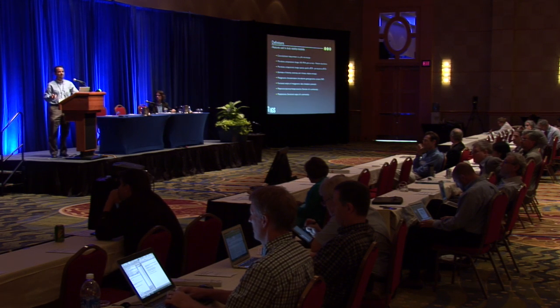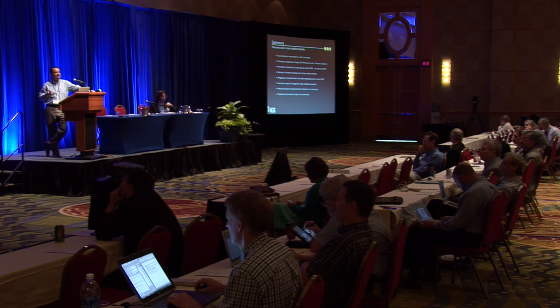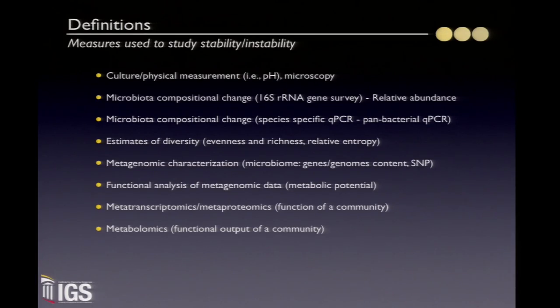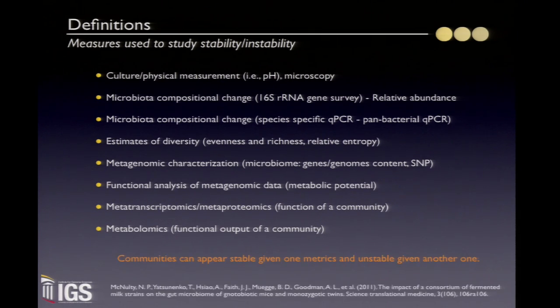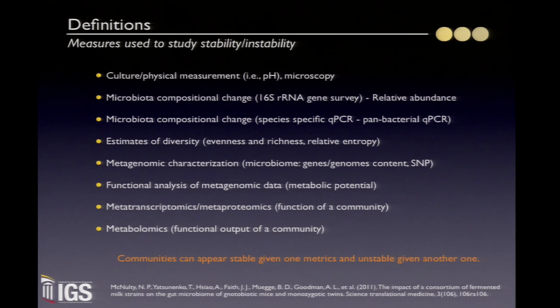There are many ways by which you can measure different metrics for stability. Depending on the metrics you use to define stability, you might get different answers. A community might appear stable given one metric, but unstable given another. A recent paper from Jeff Gordon's lab showed that by just introducing a probiotic, the community does not change in composition, but its gene expression changes dramatically. So it's very important in terms of what metrics you use — composition-based or more functional aspects of the community.